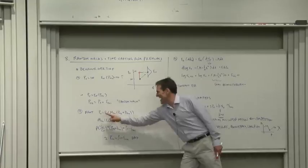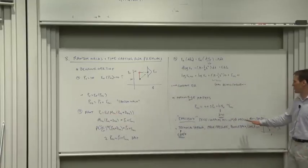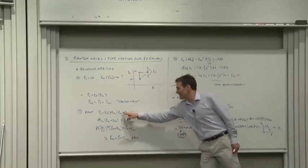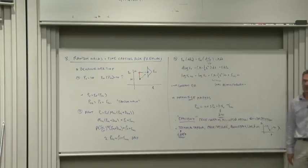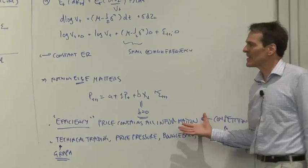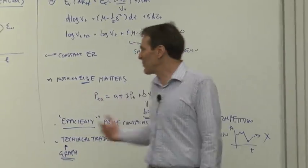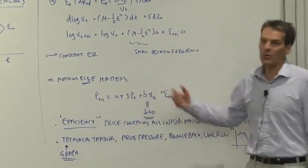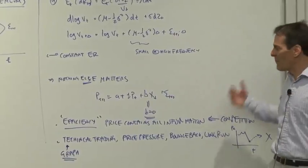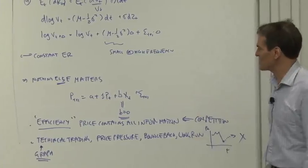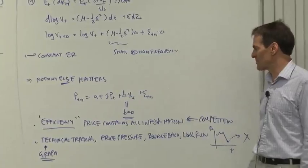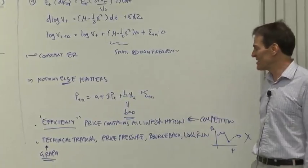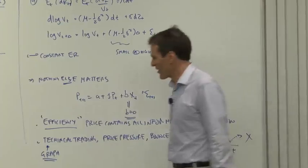Market efficiency describes in a very deep way one sense of what's going on in all our asset pricing formulas — that the price today reveals all the information there is about the expected value tomorrow, properly discounted if you're being careful, or just the price tomorrow if you're approximate and high frequency. And that's not something deep; it's just about competition. If the price today were too low, if there were some signal, then people would pour in and competition would drive the price up today. It says nothing else should be able to forecast prices — in particular, things like technical trading shouldn't work at all.